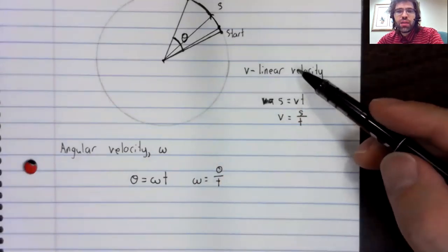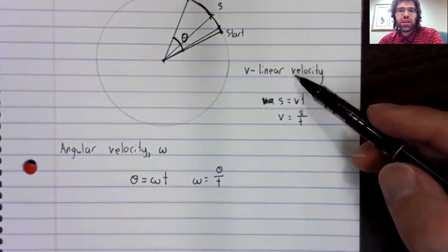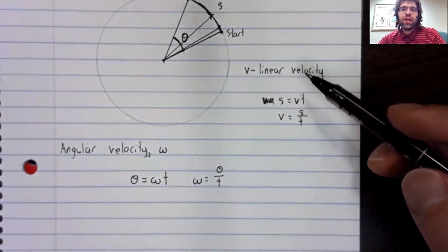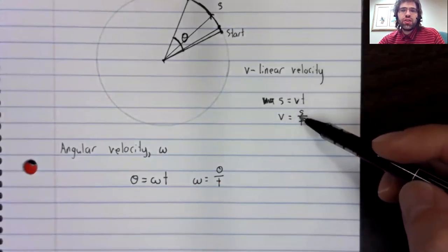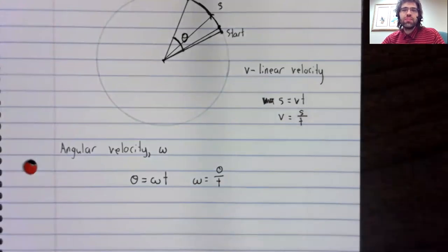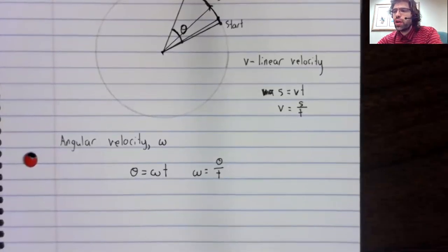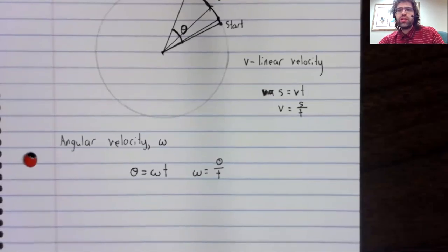Just like up here, the distance equals rate times time formula gave you an equation for the linear velocity. Now, linear and angular velocity are related to each other.